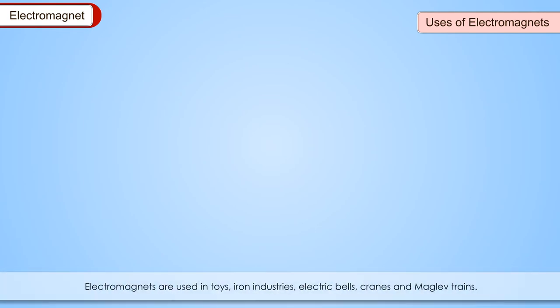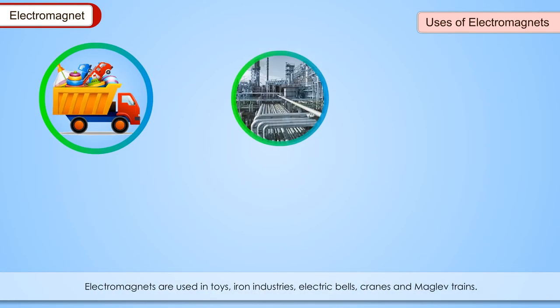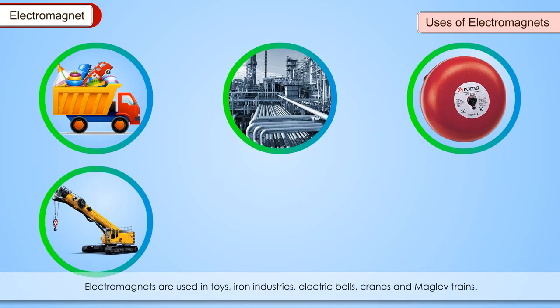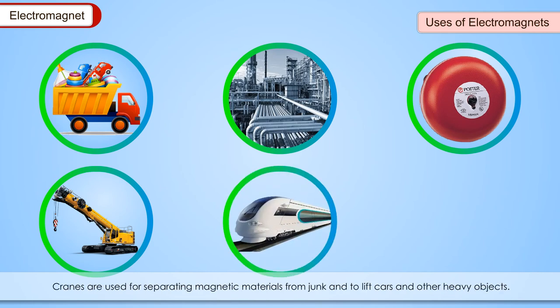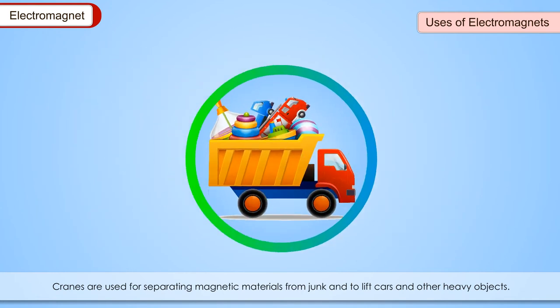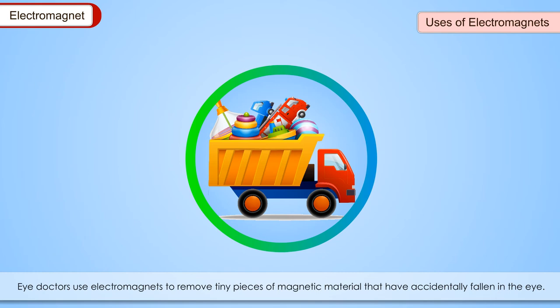Uses of Electromagnets: Electromagnets are used in toys, iron industries, electric bells, cranes and maglev trains. Cranes are used for separating magnetic materials from junk and to lift cars and other heavy objects. Eye doctors use electromagnets to remove tiny pieces of magnetic material that have accidentally fallen in the eye.